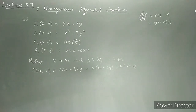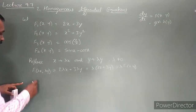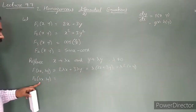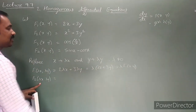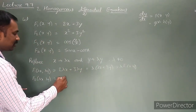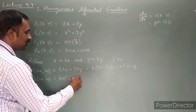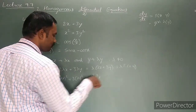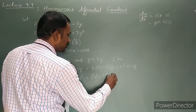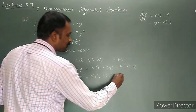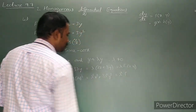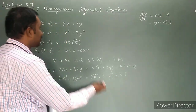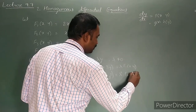For f1: f1(λx, λy) = 2(λx) + 3(λy) = λ(2x + 3y) = λ¹ · f1(x, y). For f2: f2(λx, λy) = (λx)² + 3(λy)² = λ²x² + 3λ²y² = λ² · f2(x, y). So λ² is factored outside, confirming f2 is homogeneous.